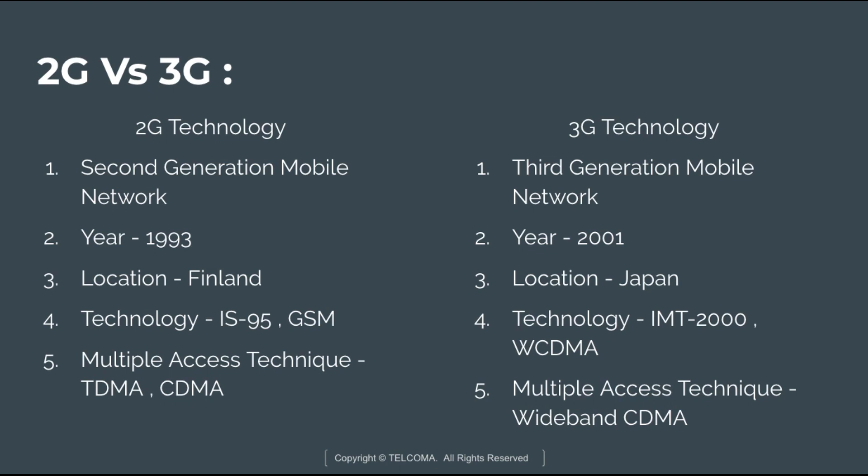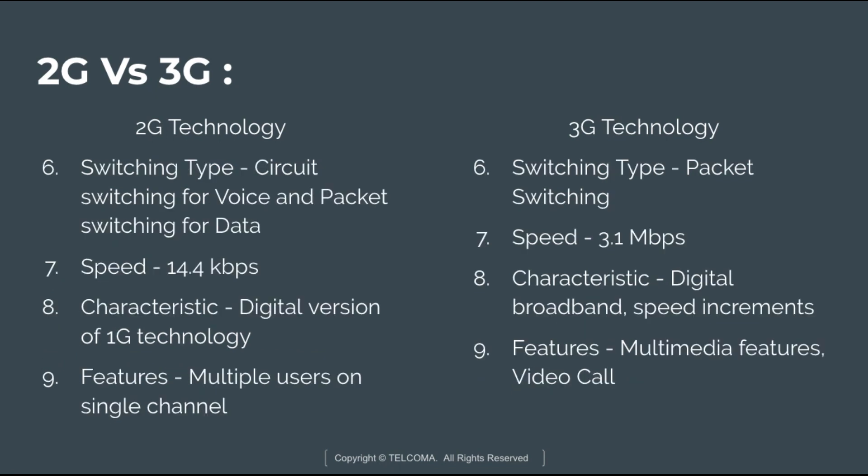2G technology is also known as IS-95 or GSM, and 3G technology is also known as IMT-2000 or WCDMA. The multiple access techniques used in 2G technologies are TDMA and CDMA, whereas in 3G technology the multiple access technique used is Wideband CDMA.